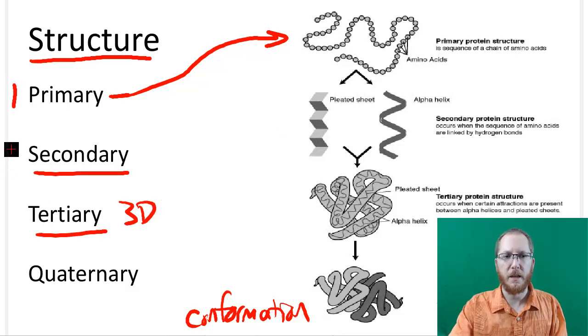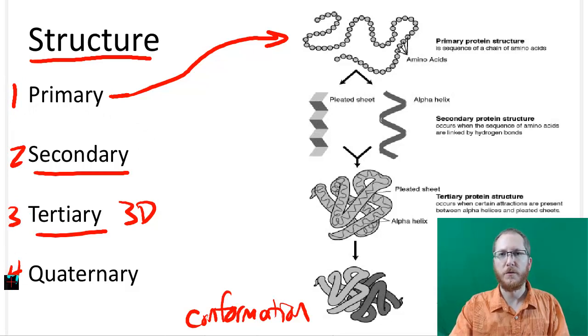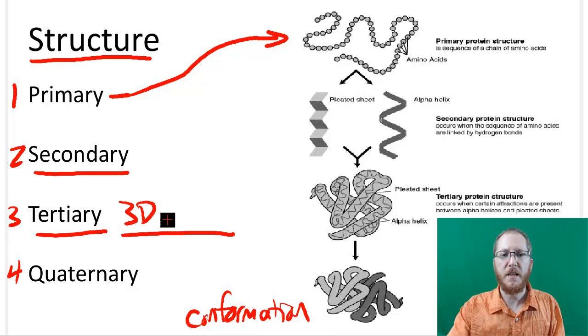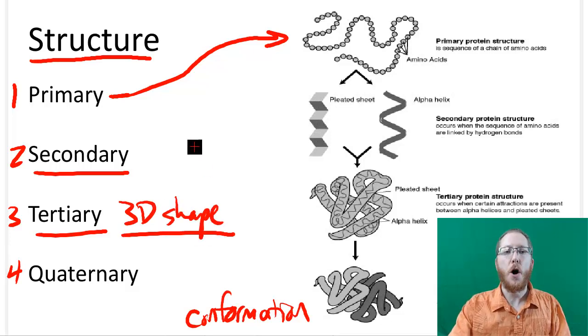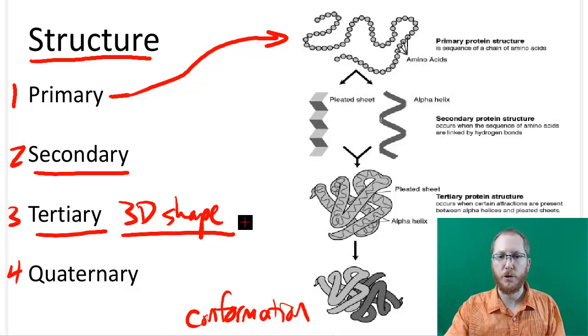So they're really just telling you what level. So the tertiary is where we start to see this 3D shape come in. And all structures that are proteins will have at least primary, secondary, and tertiary. We specifically call the tertiary structure a polypeptide. That's where that term comes from.